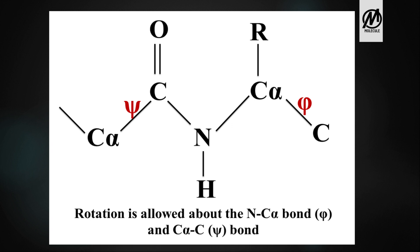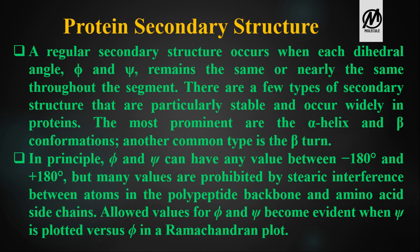Taking the Ramachandran plot a step further, we discuss the secondary structure of proteins and how the plot helps deduce it. A regular secondary structure occurs when each dihedral angle, phi and psi, remains the same or nearly the same throughout a segment. The most prominent stable secondary structures are the alpha helix and beta conformations, with beta turns also being a common type.